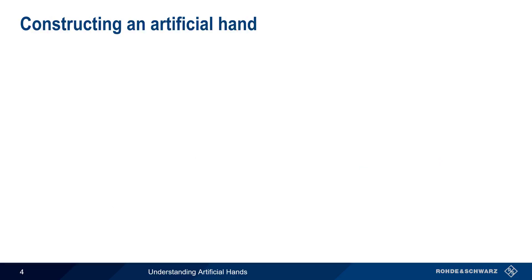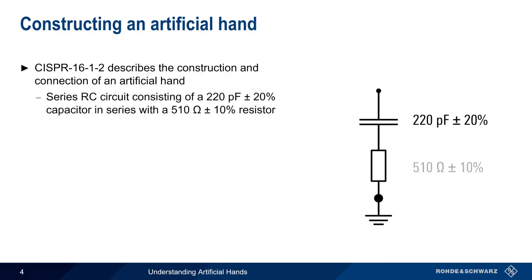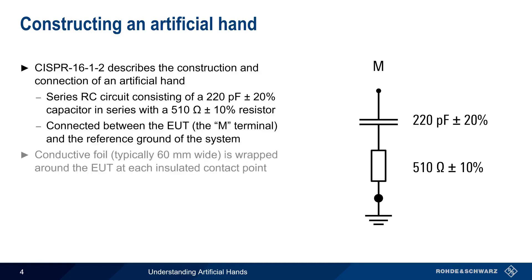CISPR 16-2 describes the construction and connection of an artificial hand. This is defined as an RC series circuit consisting of a 220 picofarad capacitor and a 510 ohm resistor, both with a given tolerance. These are connected to ground and to the EUT at a point referred to as the M terminal. The connection to insulated points on the EUT is made using conductive foil, typically 60mm wide, wrapped around each contact point.